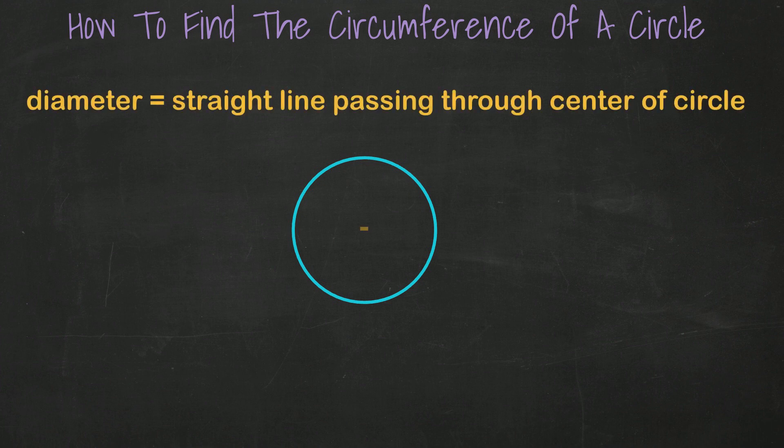The diameter of a circle is a straight line that goes from side to side and runs to the center of a circle.